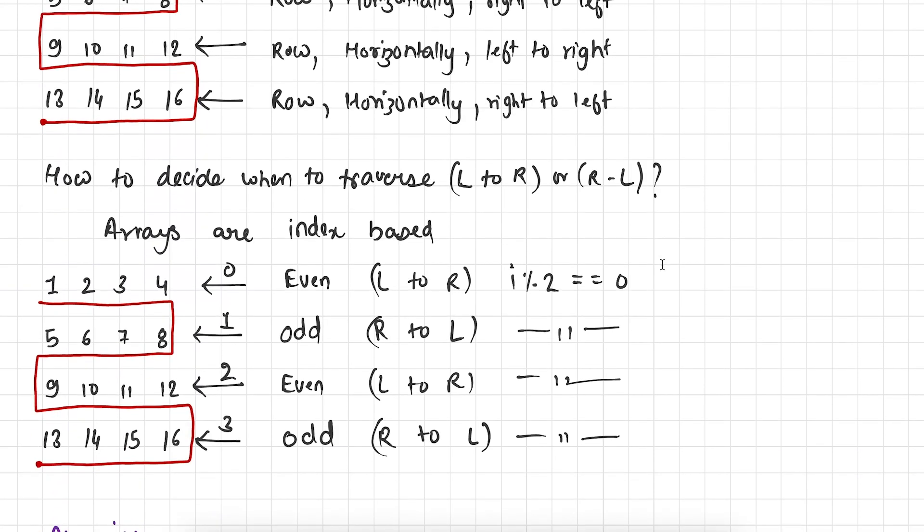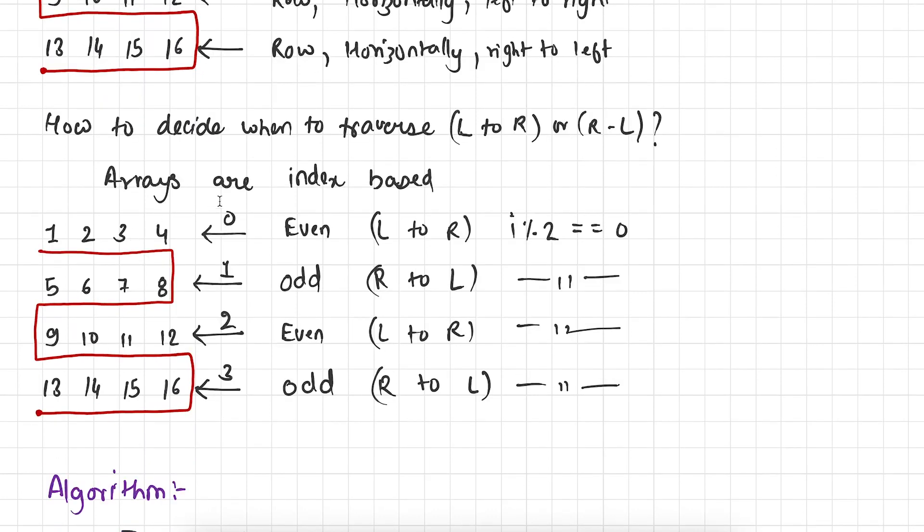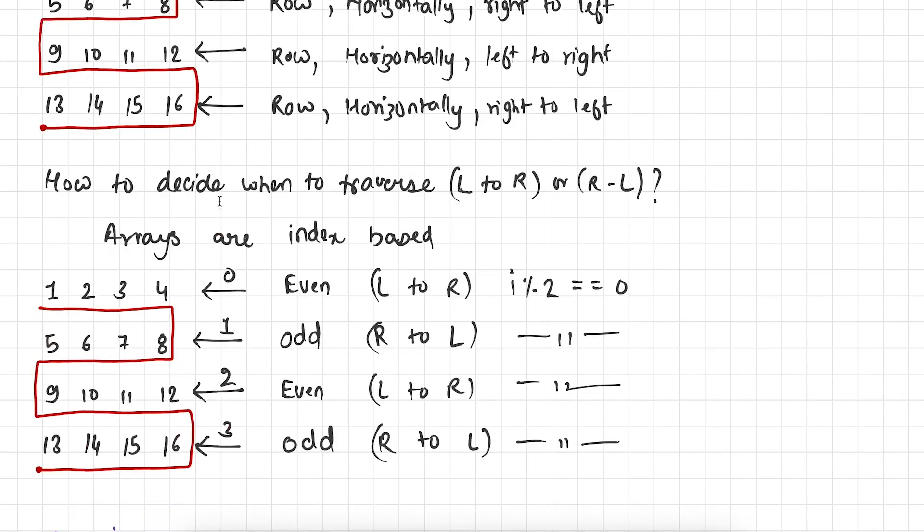Now this is where another fact of arrays kicks in and that is arrays are index based. This means every row is associated with an index. The index of first row is 0, second row is 1, third row is 2 and fourth row is 3. Now it becomes really easy to determine when to traverse left to right and when to traverse right to left. And how to determine? It's pretty simple.